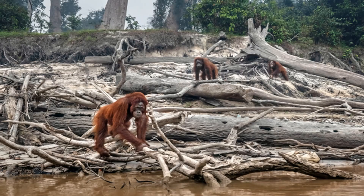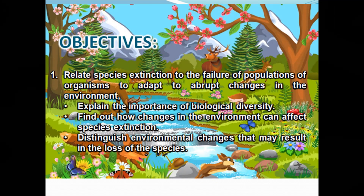What happens to the community when its species' diversity is reduced? Does loss of biodiversity affect an ecosystem's ability to sustain the species that remain or to perform certain functions that may contribute to the needs of that ecosystem? This video will help you find answers to these questions. You are expected to relate extinction to the failure of populations of organisms to adapt to abrupt changes in the environment, and explain the importance of biological diversity.